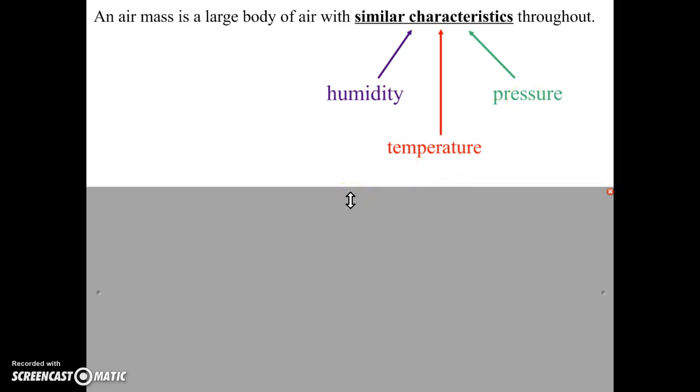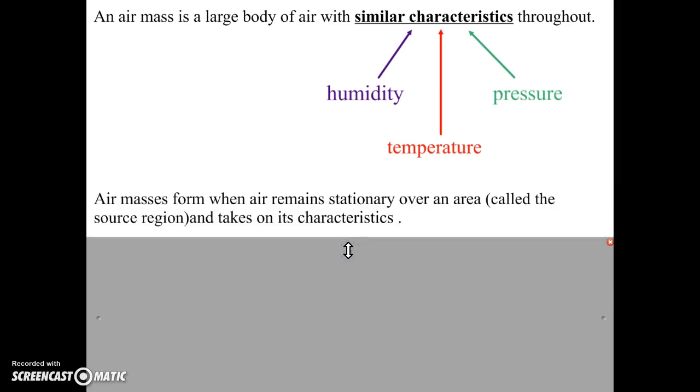So how do air masses get their characteristics? Well, the way it happens is when a large parcel of air, a large chunk of air, remains stationary over a part of the Earth for a long period of time.